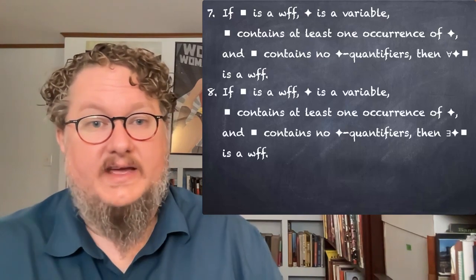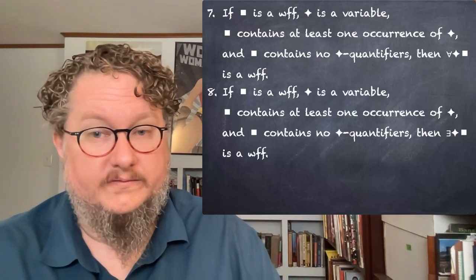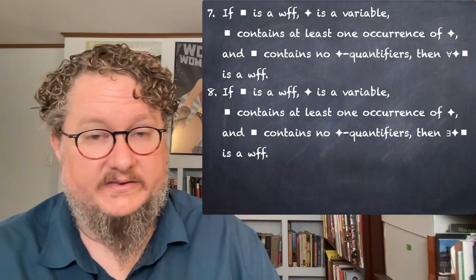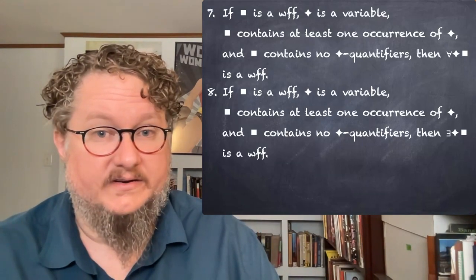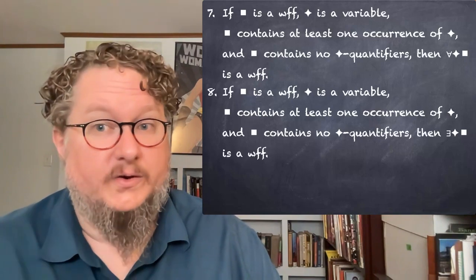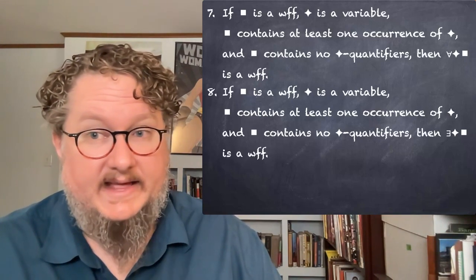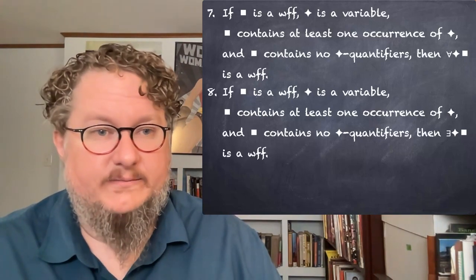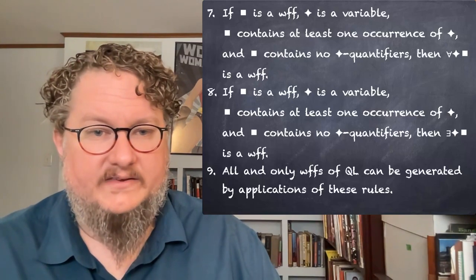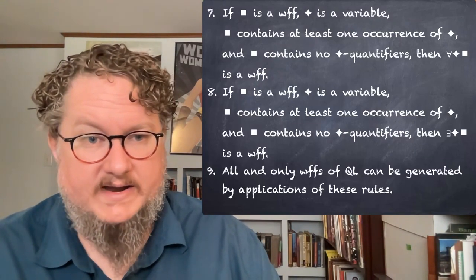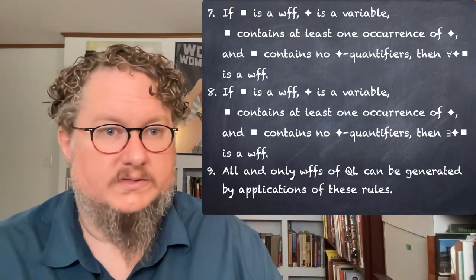And same exact rule for the existential quantifier. So this allows us to build up an expression using quantifiers. Rules seven and eight allow us to do that. And then as with SL, rule nine says all and only wffs of QL can be generated by application of these rules.